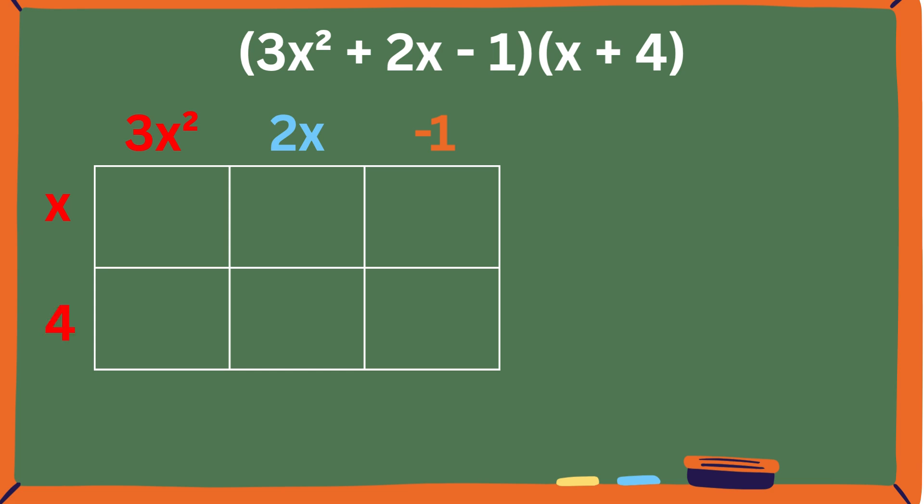Let's fill in the boxes. 3x squared times x equals 3x cubed. 2x times x equals 2x squared. Negative 1 times x equals negative x. 3x squared times 4 equals 12x squared. 2x times 4 equals 8x.